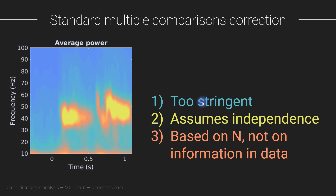The second issue is that Bonferroni correction assumes independence — that all data points are uncorrelated with each other. That is obviously not the case for time frequency analyses. Each time frequency point is strongly correlated with its neighbors, partly because brain activity is auto-correlated over time, and partly because we impose temporal and spectral smoothing during time frequency analysis.